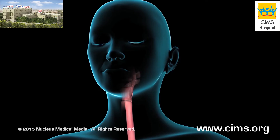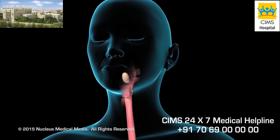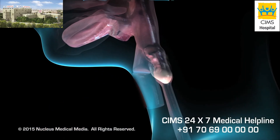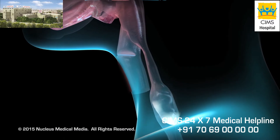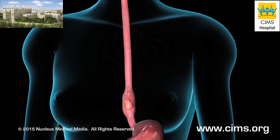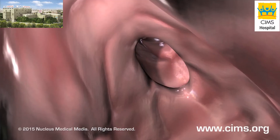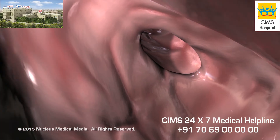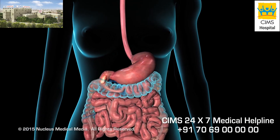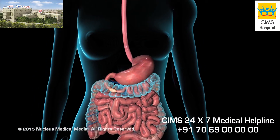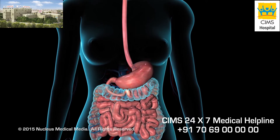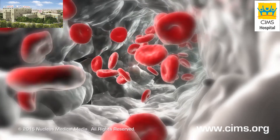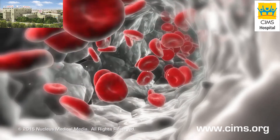Digestion of food begins in the mouth. When you swallow, food is pushed down into your esophagus, a muscular tube that carries food to your stomach where it is digested. From the stomach, food travels to your small intestine, where digestion continues and nutrients are absorbed into the bloodstream.